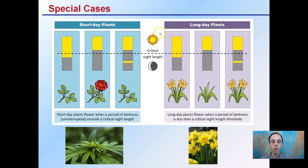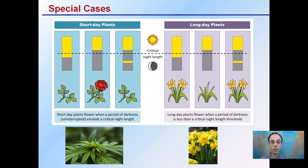Technically we may have the same total hours of darkness, but if the lights come on for some reason — a faulty switch or someone turning on the lights unintentionally — it breaks the night. As a result, the two sections of darkness are each insufficient, so the plant will remain in the vegetative state.